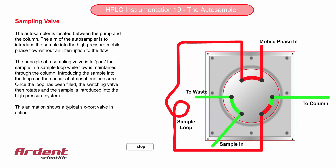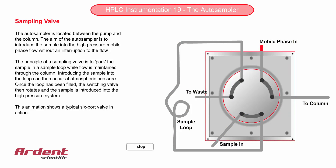This animation shows a typical 6-port valve contained in a manual injector. The sample is introduced into the sample loop, and this is often done just with a manual syringe, and then the sample loop is completely filled. Therefore, to vary the injection volume, the sample loop itself would have to be physically changed.